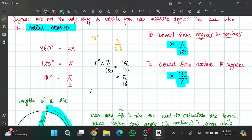What if I have π/7? I'll multiply by 180/π. So this cancels, 180/7 is 180 over 7, which gives me 180/7.